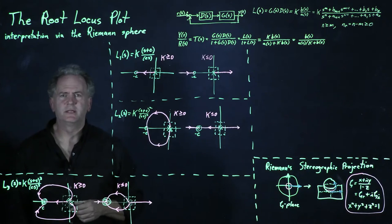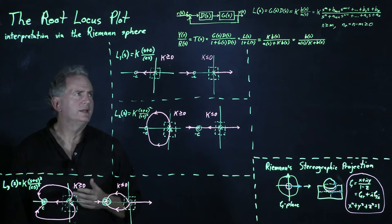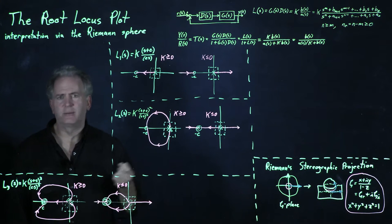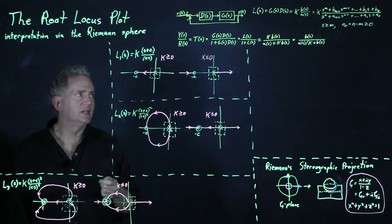In the previous video, we considered the root locus plot as a useful tool in classical control design. Root locus plot characterizes where the closed loop poles are and how they move as a parameter in your open loop transfer function L is changed.